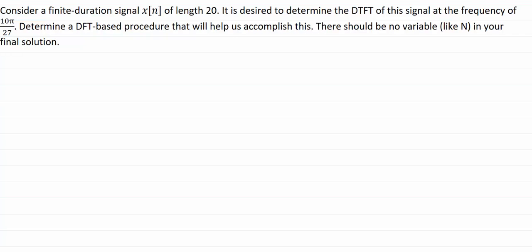Let's understand this problem. We are given a finite duration sequence Xn of length 20, and we need to find the DTFT of this signal at the frequency 10π over 27. We need to find a DFT-based procedure that will help us accomplish this.